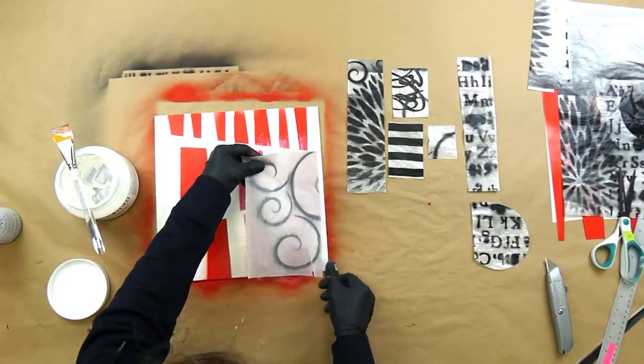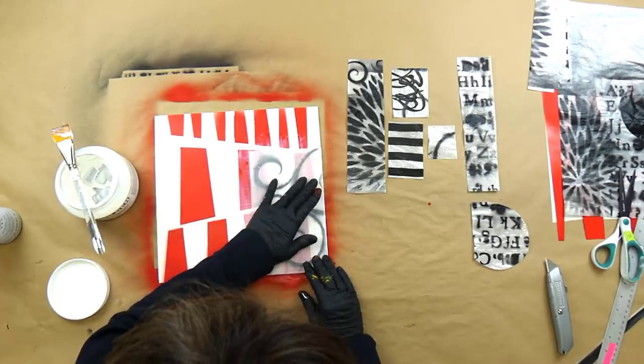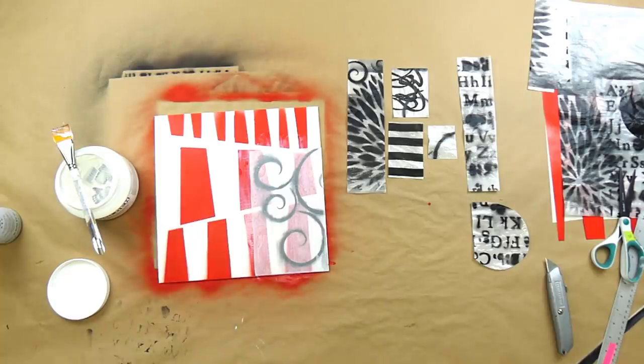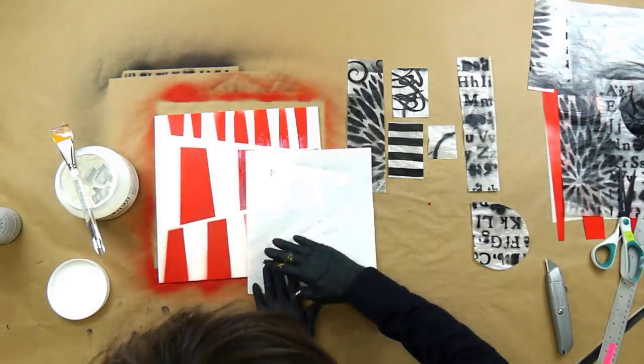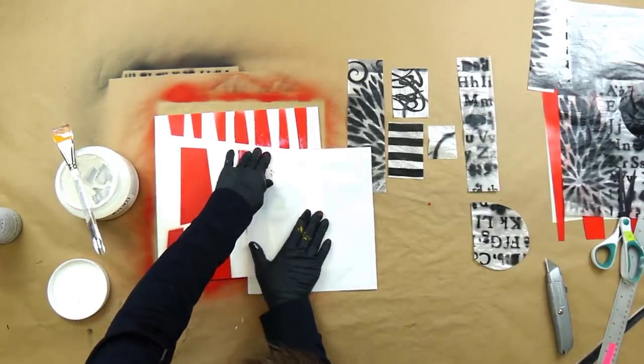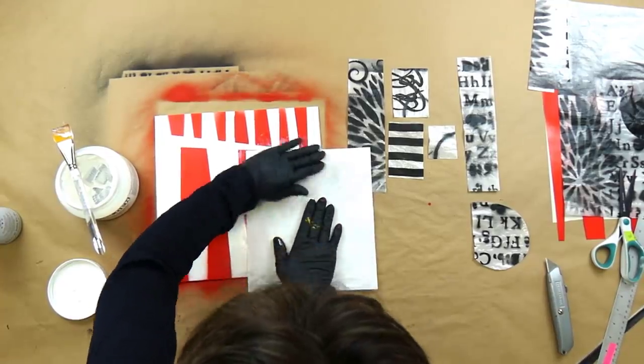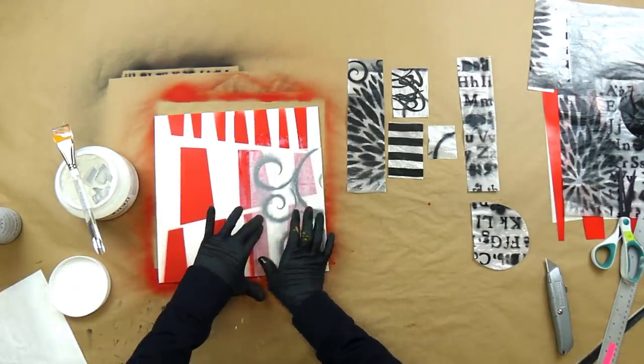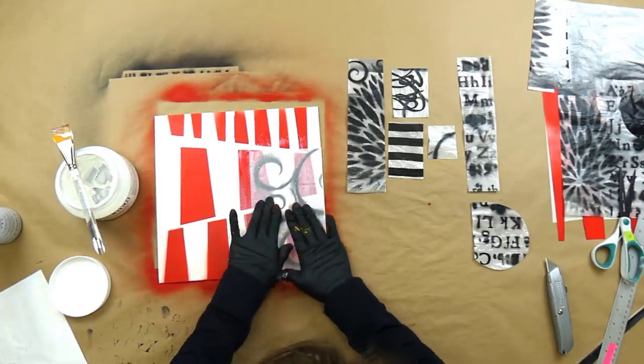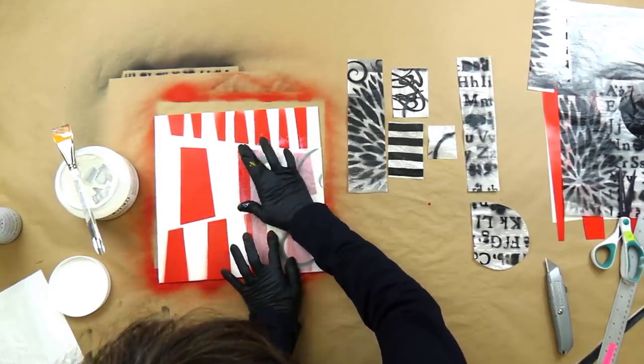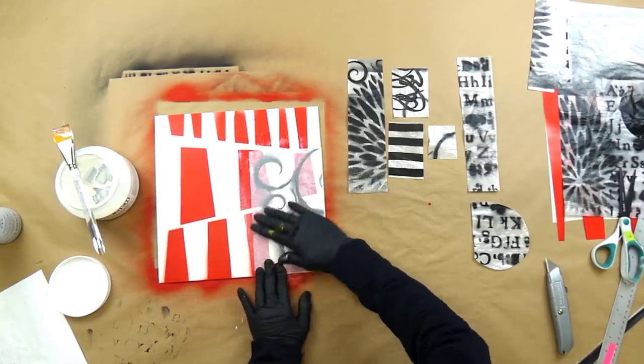I wanted to kind of line that up with the edge. I just want to flatten that, spread it, grab some either newsprint or tissue paper. Really, anything will do. I've got some freezer paper here. So, I just want to make sure that I get the edges down really well. Now, you will sometimes see some wrinkling happening. Those are just like air pockets underneath but you can, the beauty of this is you can see through it and you can kind of push any excess medium out from underneath it but in the end, it's really not going to matter.